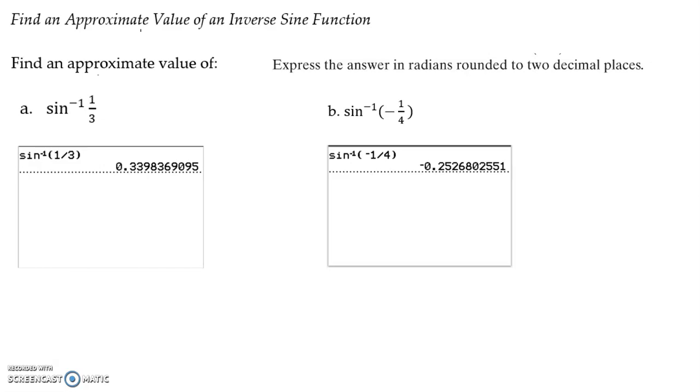In this question, we want to find the approximate value using the inverse sine function. Make sure we're expressing our answer in radians rounded to two decimal places. On your calculator, make sure you put it in radian mode, and then you can type these in exactly like you see them.